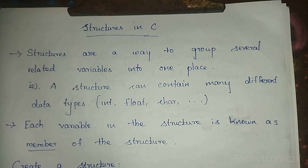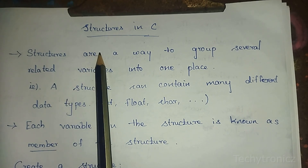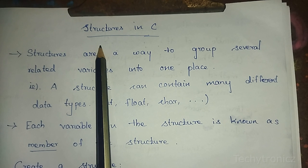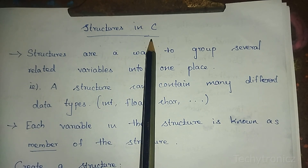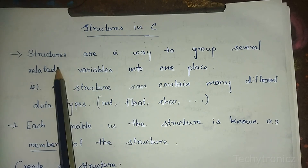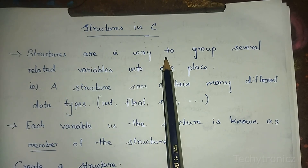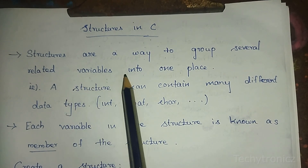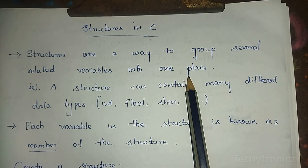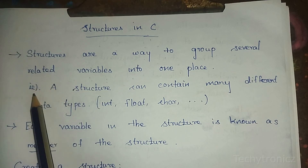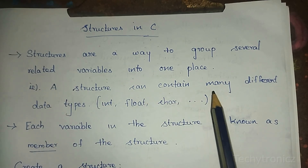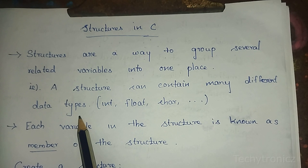Hi students, this is our second unit's first topic: structures in C. Structures are a way to group several related variables into one place. A structure can contain many different data types, for example, int, float, and character.